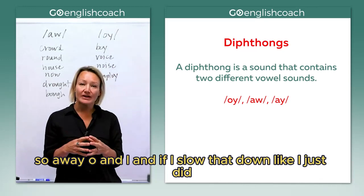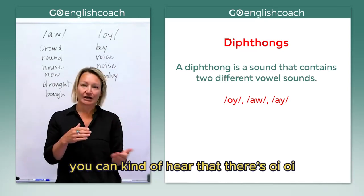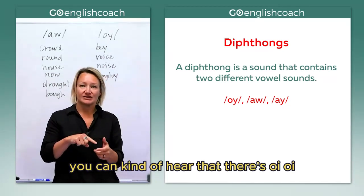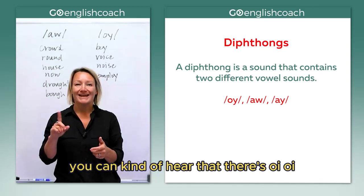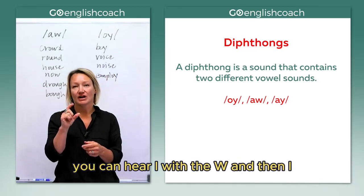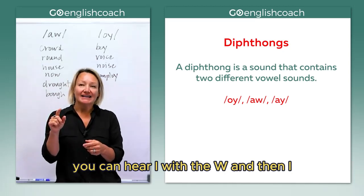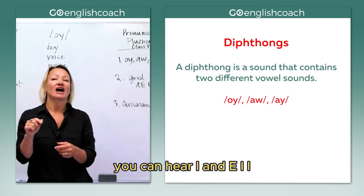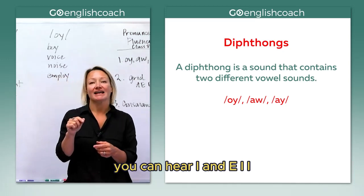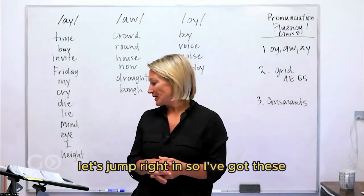If I slow that down, you can kind of hear that there's oi — oi. So there's that oi, then au. You can hear 'ah' with the 'w'. And then ai — you can hear 'ah' and 'e'. Ai, ai. Let's jump right in.